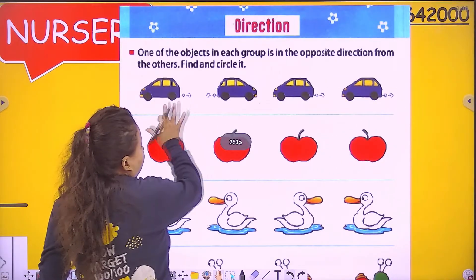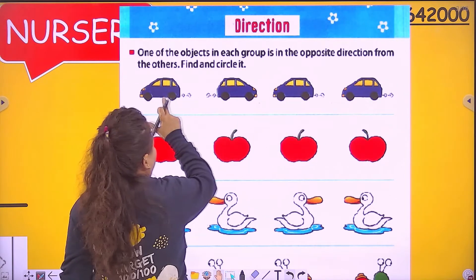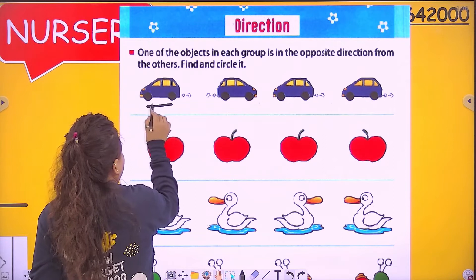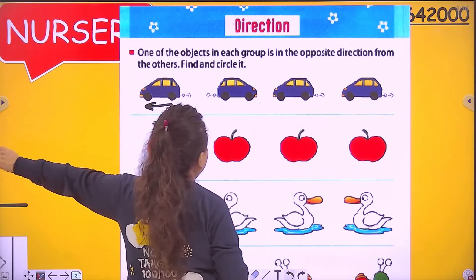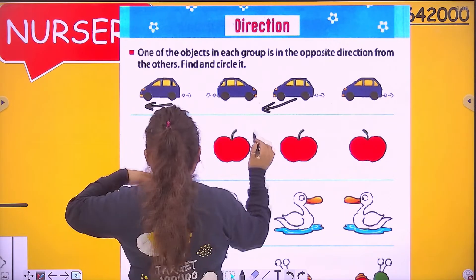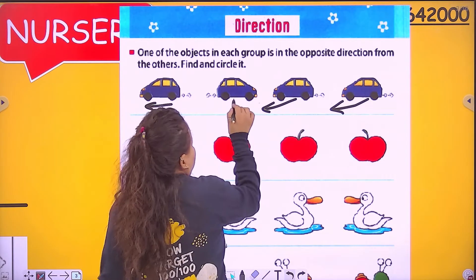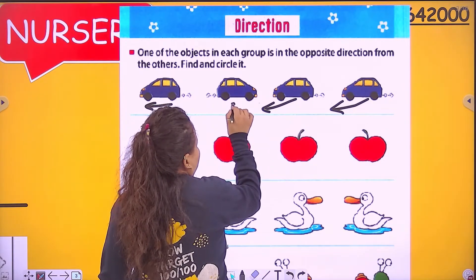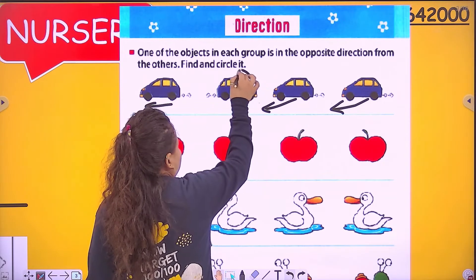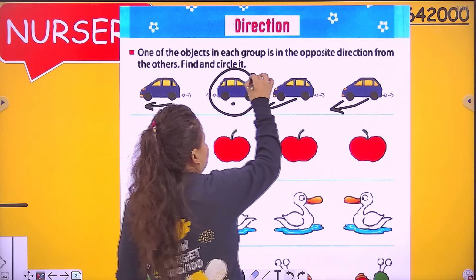Now in the first row there are four cars. This car is going left, this car is going left, this car is going left — but this one is in the opposite direction. So I found out, and now I circled it.